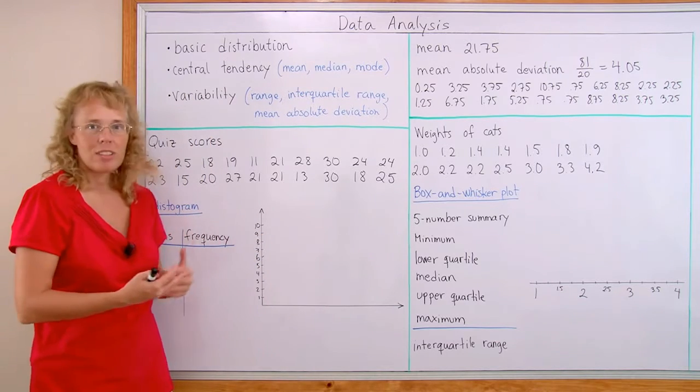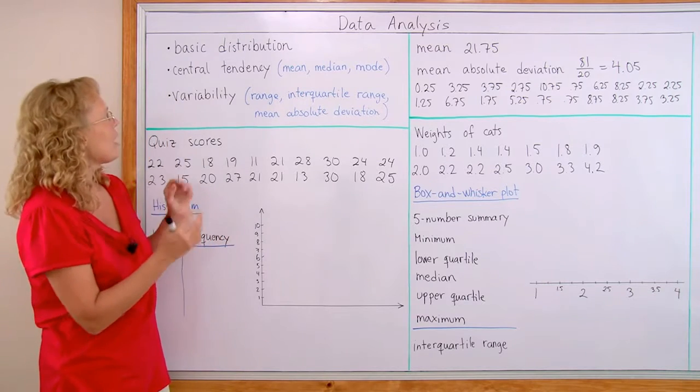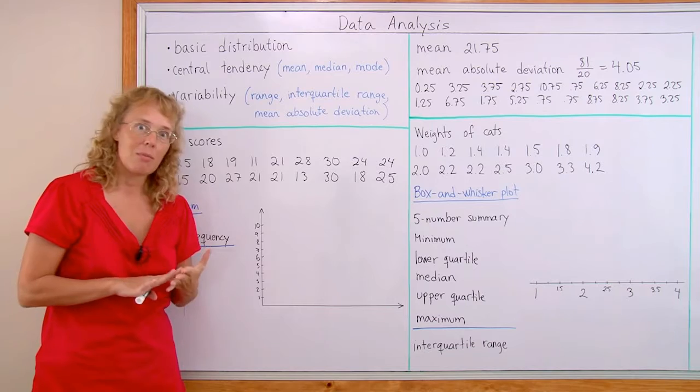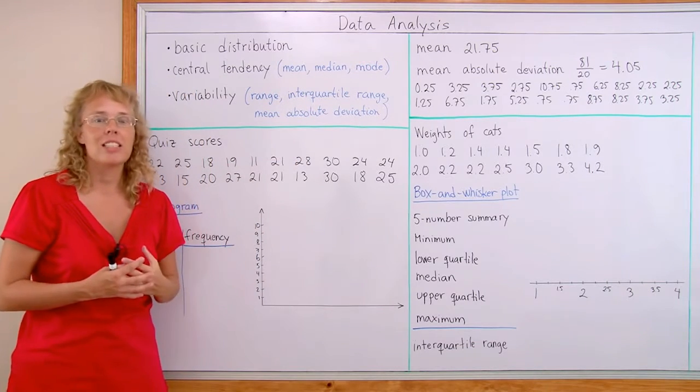But typically, most of the time, there is like a peak in the middle, so we need to find about that. And we can use three different numbers: mean, median and mode, to measure the central tendency of the data.